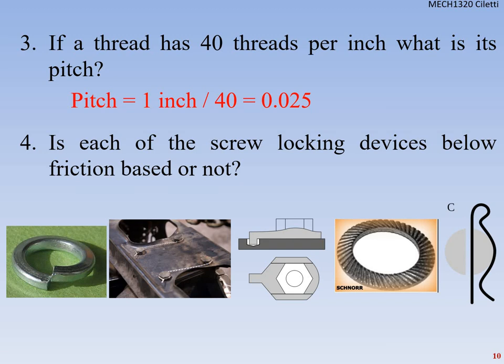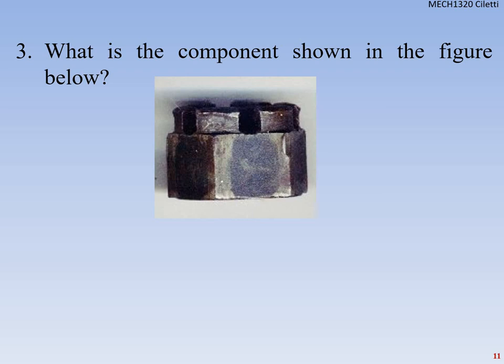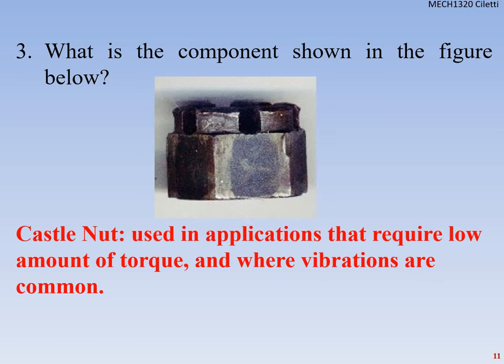For locking device classification: the spring lock washer is friction-based — yes. Safety wires are also friction-based — yes (this was noted as a misprint in the slides). Lock nuts are non-friction-based — no. Lock washers are friction-based — yes. Cotter pins are non-friction-based — no. Finally, the component shown that looks like a castle or rook is a castle nut, used in applications with common vibrations.